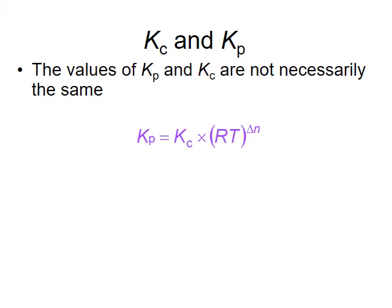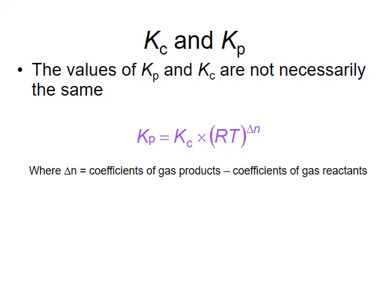It is possible to convert between Kc and Kp for gaseous reactions using the ideal gas law. I'm just going to show you the final formula for converting between the two equilibrium constants. Kp equals the value of Kc times the ideal gas constant times the temperature in parentheses, raised to the power of delta N. Delta N stands for the difference between the number of moles of gaseous products and moles of gaseous reactants in the balanced chemical equation, as represented by the coefficients. The ideal gas constant R used here is 0.08206 L·atm/mol·K, and temperature is in Kelvin.